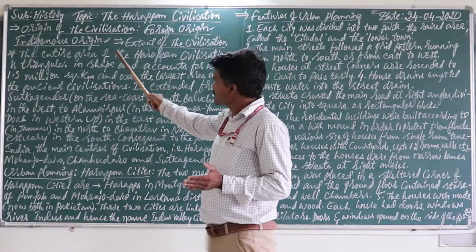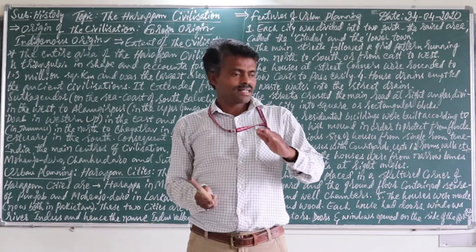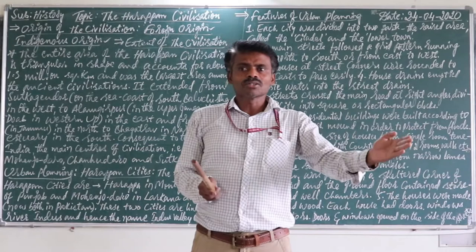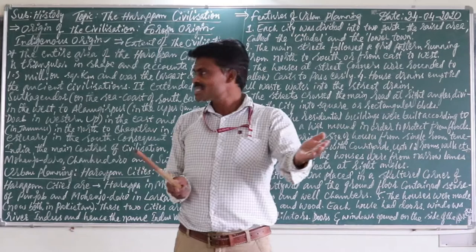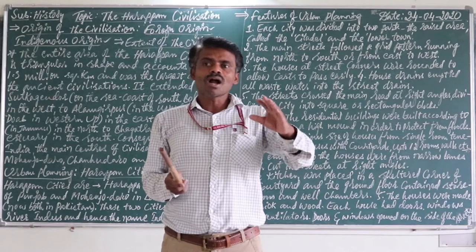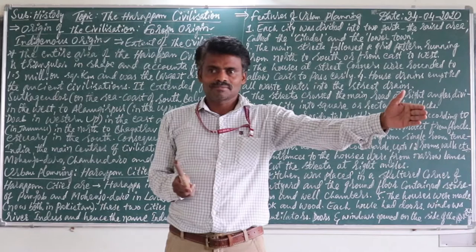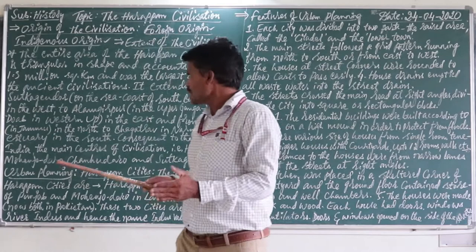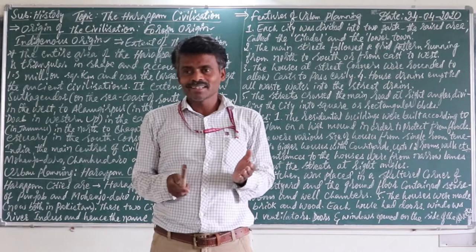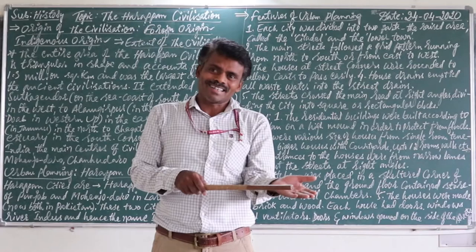This is an indigenous origin. After the partition of India and Pakistan, some parts went to Pakistan and some parts of the civilization remained in India. As I told you, the west part is Balochistan — that is not our country. Now, if we combine both Sutkagendor and Alamgirpur, that area is part of India and part of a foreign country.